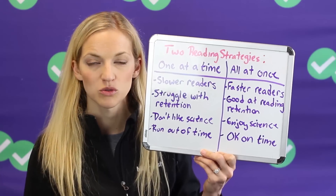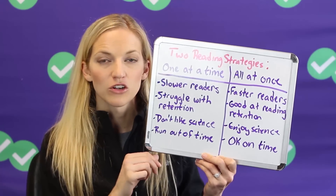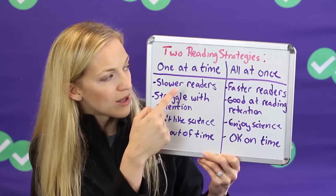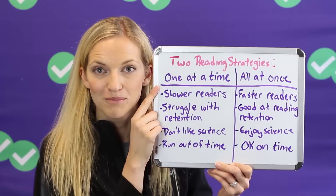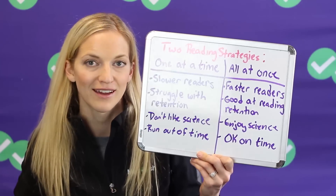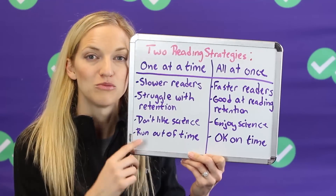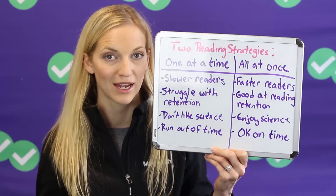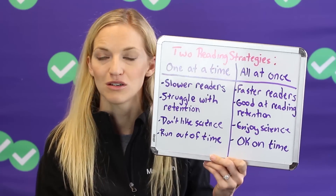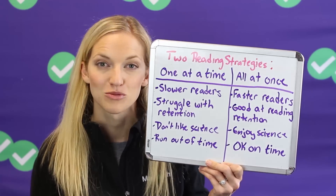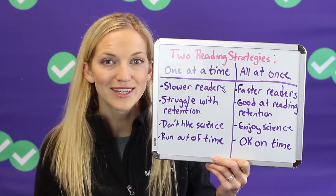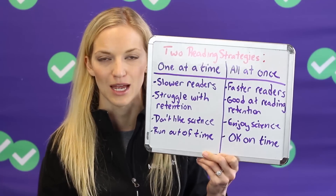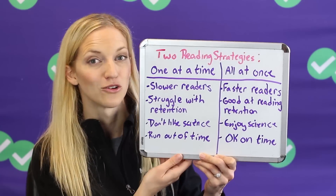Try both in practice and see which one works better for you. If you're dealing with the conflicting viewpoints passage last on the test and you're running out of time, always do the one-at-a-time method, because there's no point in reading everything if you're not going to be able to get to the questions. If you are running out of time, scan through the questions first and see which perspective has the most questions on it. If that's perspective two or three, just read that one first and answer those questions — you'll get more questions answered without wasting time on content you don't need.